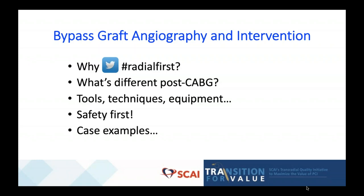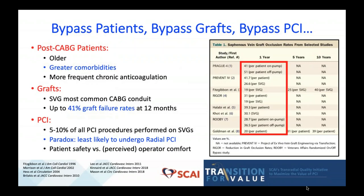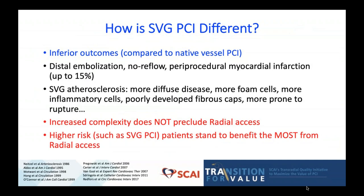Post-cardiac bypass patients are generally older, have greater comorbidities, and are more frequently chronically anticoagulated. Vein grafts are the most common bypass conduit across the world and have very high failure rates. Percutaneous coronary intervention to bypass grafts is still fairly common, and yet these are the highest-risk patients, the ones least likely to enjoy the benefits of lower vascular access complications and other downstream positive effects of transradial PCI. When we look at PCI to saphenous vein grafts, these interventions have less good outcomes compared to native vessel intervention.